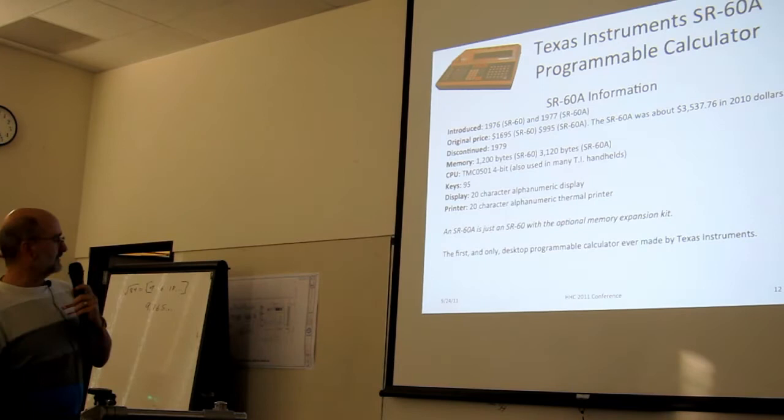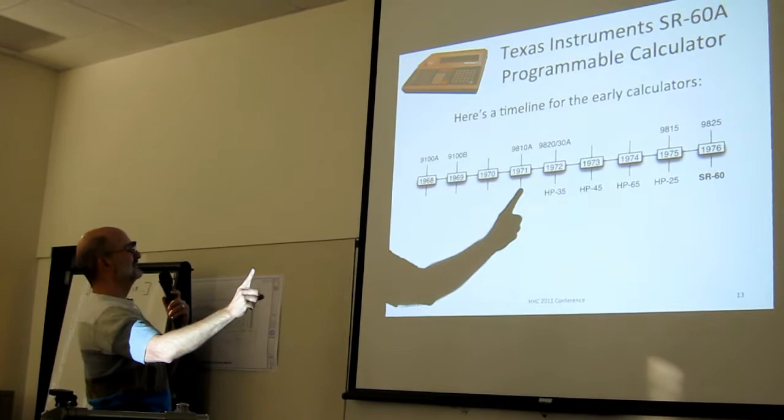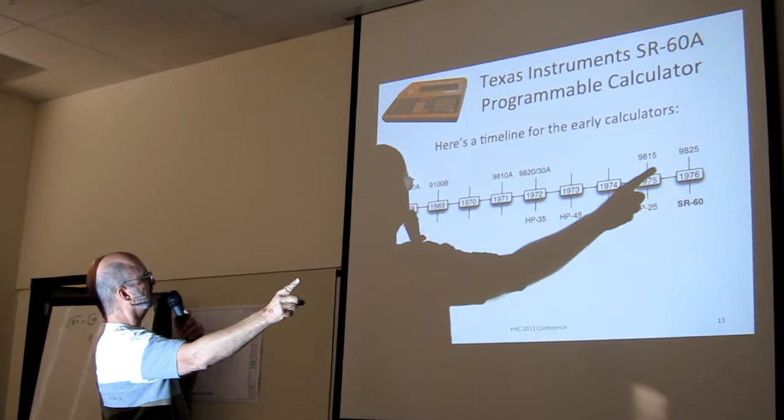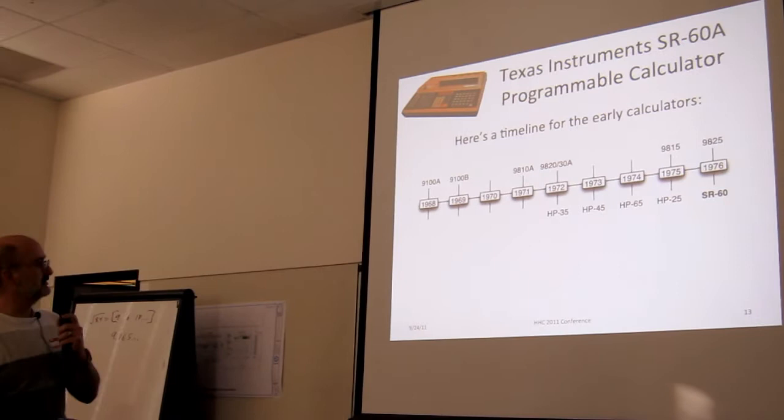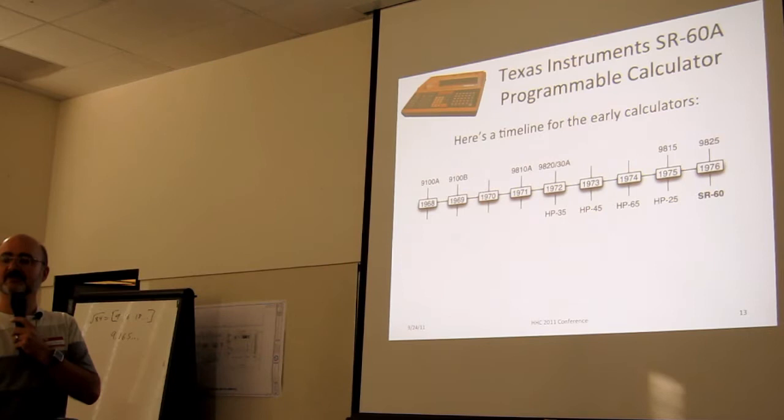And the neat thing about this calculator is it has a full alphanumeric display. Here's a timeline to kind of put it in perspective. This is my virtual laser pointer. The 9100 came out in 1968. So we have the 9810 in '71. So by the time the SR60's out, we've got a pretty good stable of HP machines that are competitive with it. As far as I know, this is the only desktop programmable TI ever came out with.